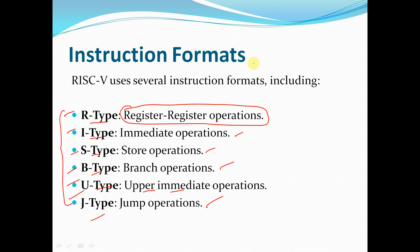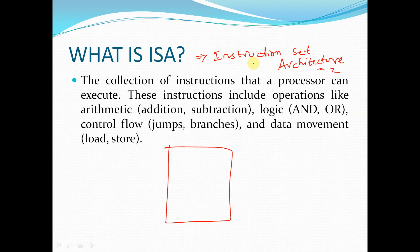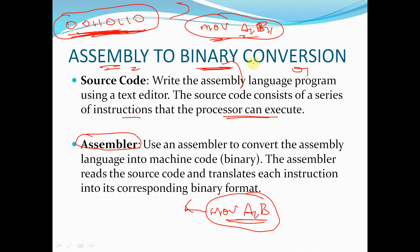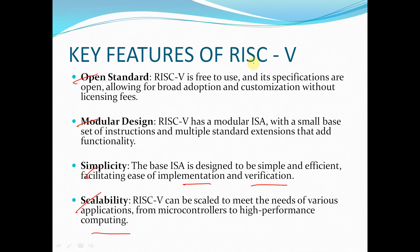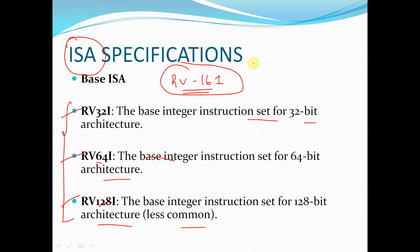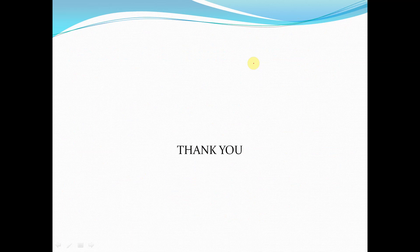Today in this session, we discussed the introduction to ISA, briefly covered assembly to binary conversion, how we deal with binary data, and saw the RISC-V overview including key features, ISA specifications, and standard extensions. From the next session, we will start with the RISC-V base ISA. If you have any doubts or queries, you can ask. Thank you.